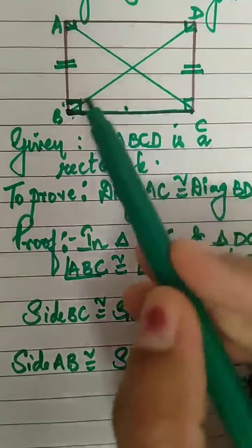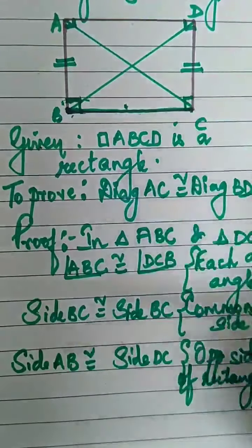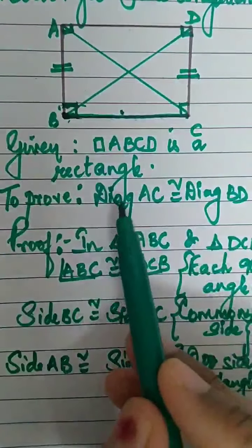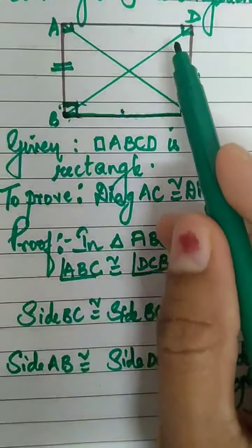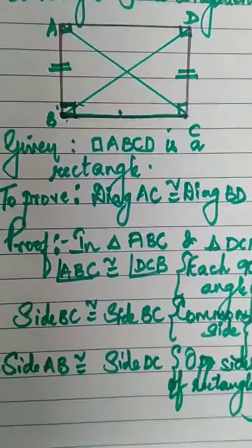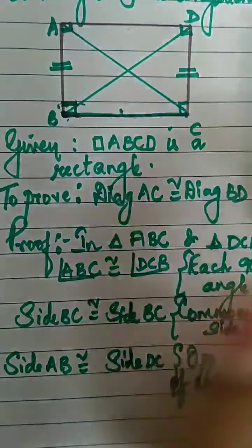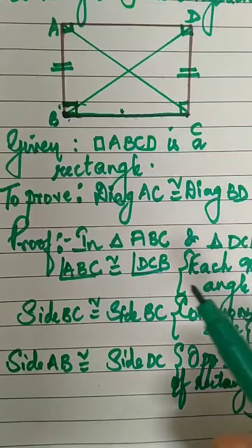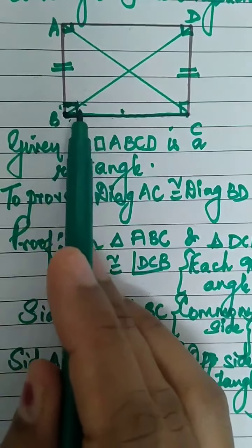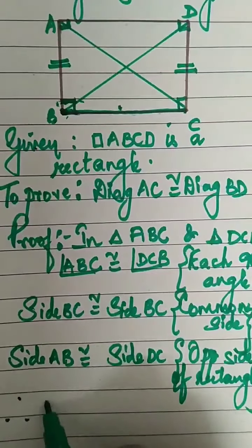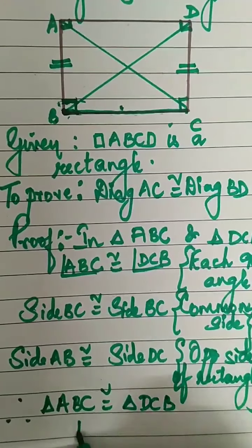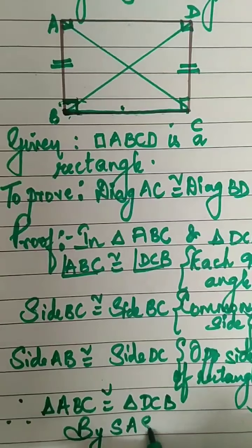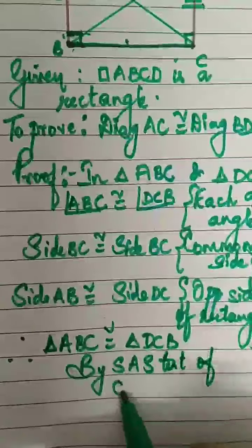By which test are these two triangles congruent? Since we have 90 degrees, you might think of the hypotenuse side test, but we don't have information about the hypotenuse — that's what we want to prove. So we use the side-angle-side (SAS) test. Therefore, triangle ABC is congruent to triangle DCB by the SAS test of congruence.